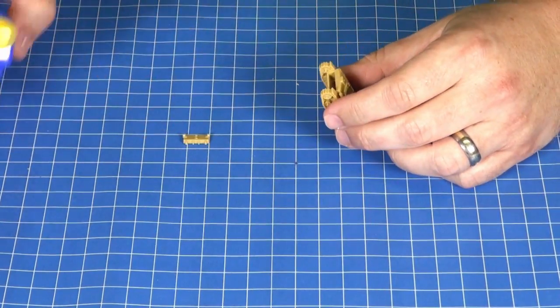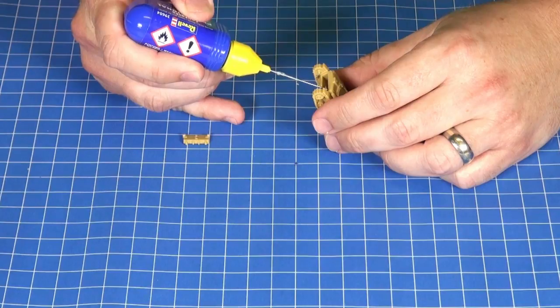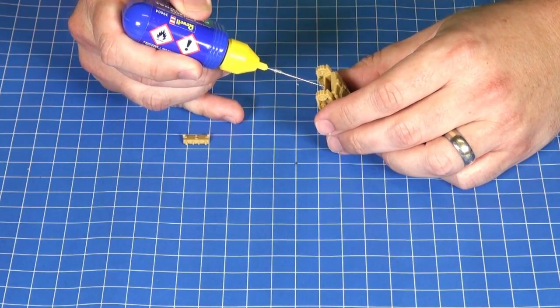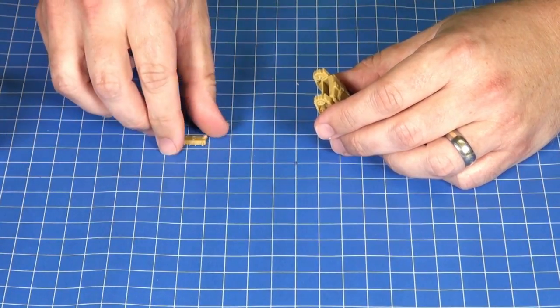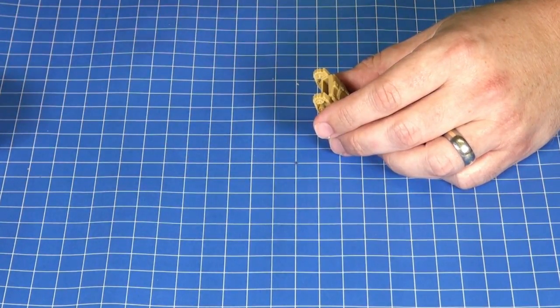Next up we'll attach the rear hull. Just run some glue around those surfaces, and then you should even hear a nice little snap as the rear hull piece fits in. It's nice and snug.